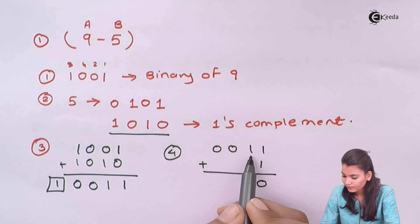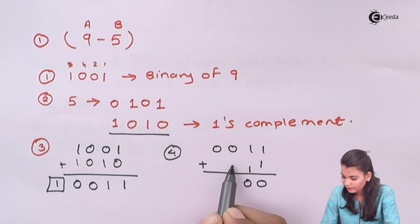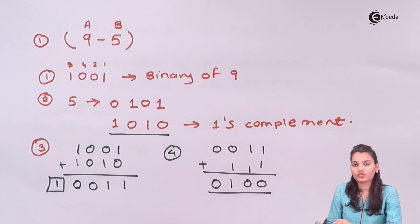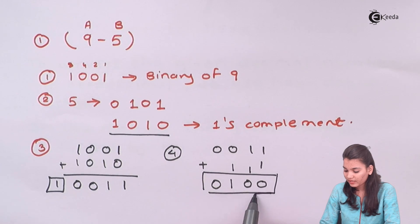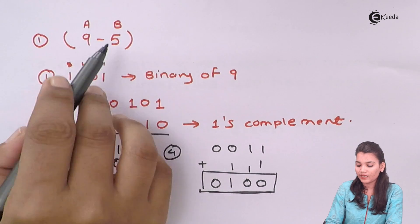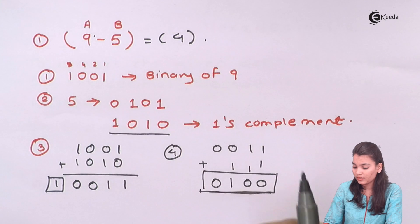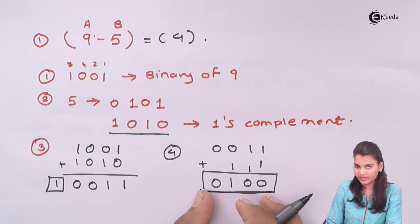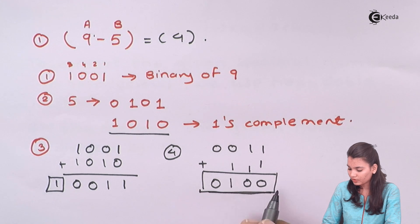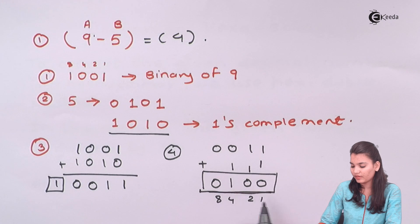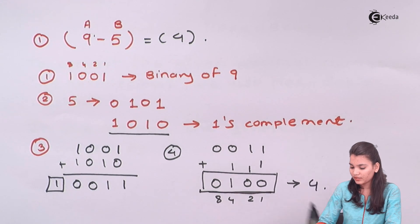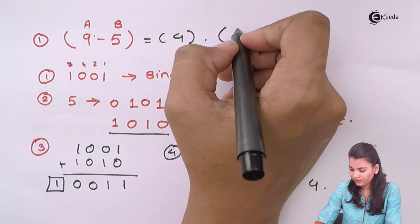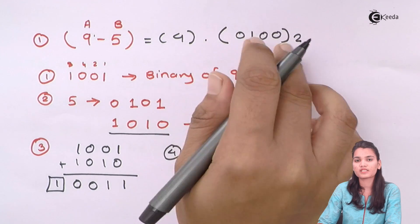So 1 plus 1 gives 0 with carry 1; again 1 plus 1 gives 0 with carry 1; and 0 plus 1 gives 1, and 0 remains. So our final answer is 0, 1, 0, 0. To verify: 9 minus 5 in decimal gives 4. Converting the binary result 0, 1, 0, 0 — the place values are 1, 2, 4 — we get 4. Therefore, in binary subtraction using one's complement, the answer is 0, 1, 0, 0, which equals 4.